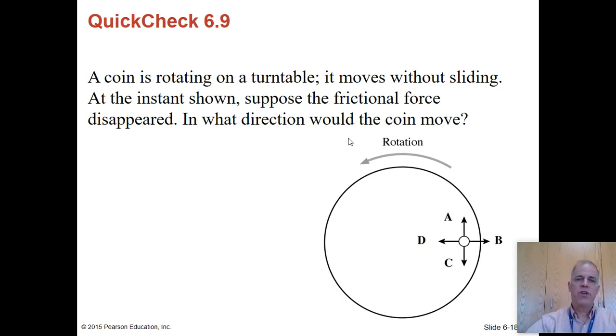If the frictional force disappeared, it will go in direction A. Because it's just like if we cut the string, then the ball is going to continue on in this direction. In this case, it's a coin. But since it's moving in this direction at this moment, if the force is removed from it, it's going to keep on going in that direction pretty much forever because that's first law.